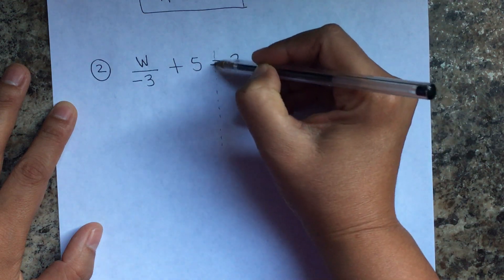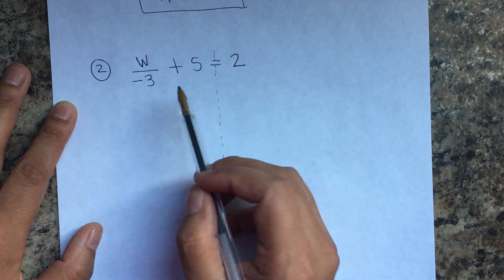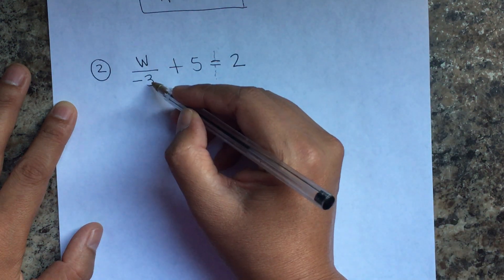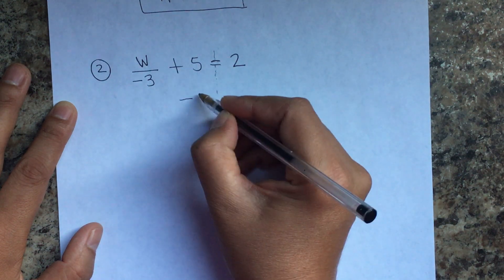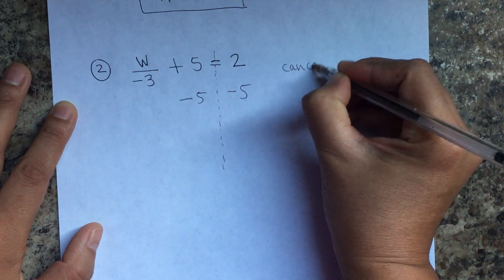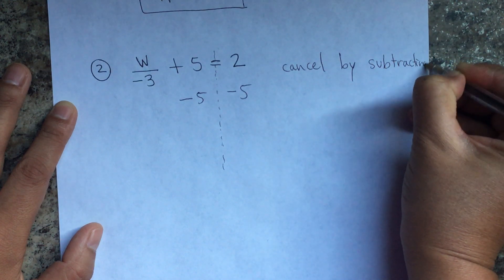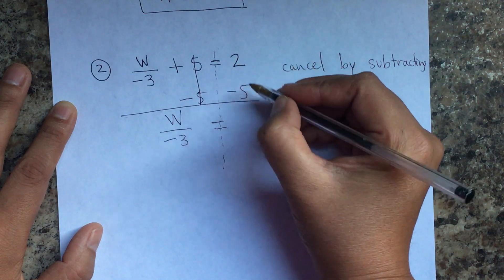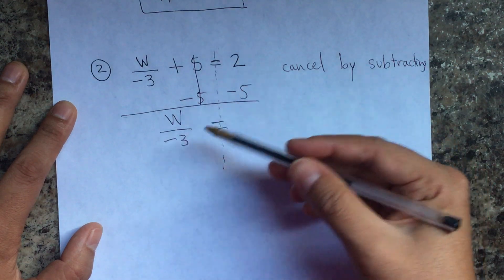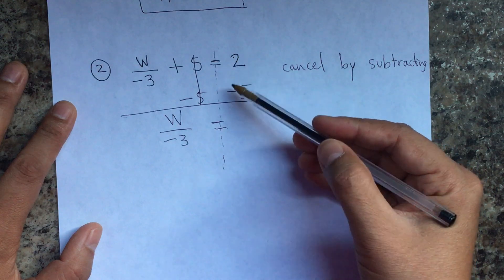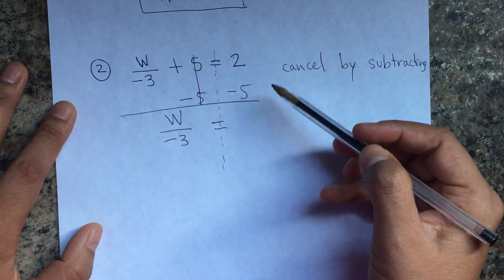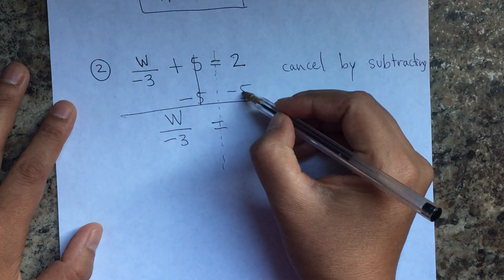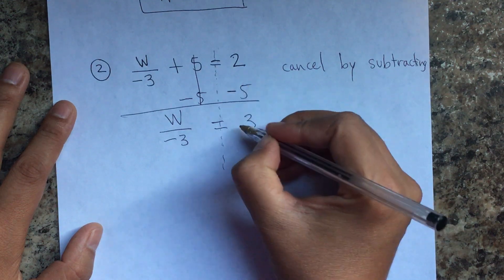Now let's look at this next example. I didn't do a division bar on the first one, but remember there is a division line — whatever you cancel, you have to cancel on both sides of that line. On the equal sign, draw the line if you need to. Here we're dividing by negative three and adding five, so the opposite of adding is subtracting five — cancel by subtracting. So w divided by negative three equals two minus five. When we have different signs we subtract and leave the sign of the bigger number. Same signs add; different signs subtract and leave the sign of the greater one.